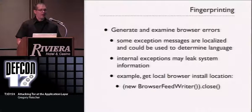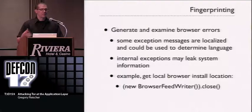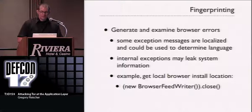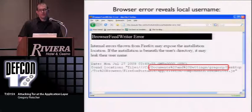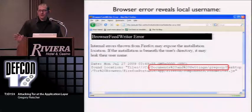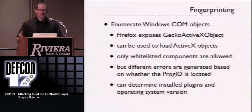We can also generate and examine browser exceptions. Error messages from JavaScript are localized, and this doesn't depend on your user agent setting. You can build a list of all possible error messages and their localized values to determine which locales the user has enabled. Additionally, we can generate errors in the Firefox code itself. For example, the browser feed writer has a problem: if you create it without calling a method and then close it, it generates an exception message that leaks your installation location — including your username if Tor Browser Bundle is installed on your desktop. This works on Linux and Mac OS X as well.